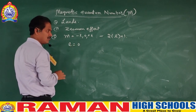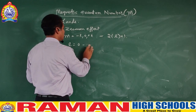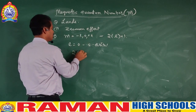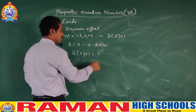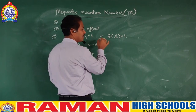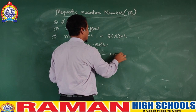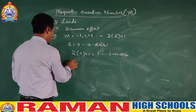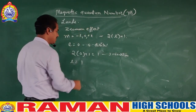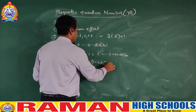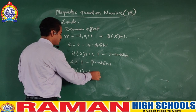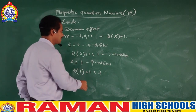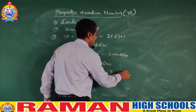The magnetic quantum number tells us how many orientations there are for every orbital or sub-shell. When L is 0 — meaning S sub-shell — substituting: 2 × 0 + 1 = 1. So there is one orientation for the S orbital. When L is 1 — meaning P orbital — 2 × 1 + 1 = 3. So there are three orientations for P orbitals, which we call Px, Py, and Pz.